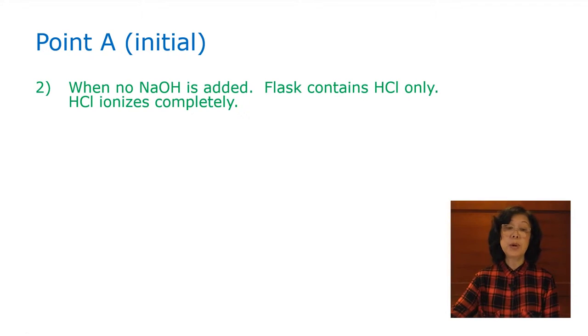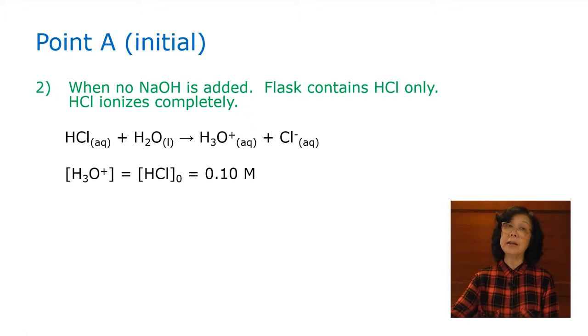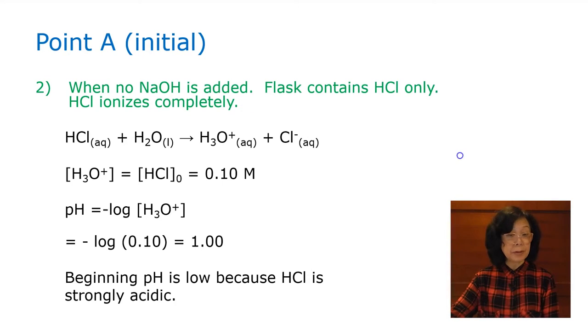Point A. This is when no NaOH is added. The flask only contains HCl. HCl ionizes completely, therefore, the hydronium ion concentration is equal to the concentration of the initial HCl, which is 0.1 molar. So, pH is 1.00. The beginning pH is quite low because HCl is strongly acidic.